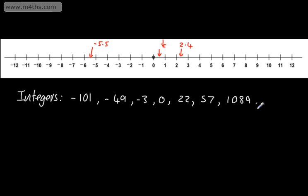We need to be careful sometimes because numbers that might not necessarily look like integers could be. For example, if we had 9 over 3, this looks like a fraction, but 9 divided by 3 is 3, which is an integer. If we have the square root of 36, that's 6, which is a whole number.